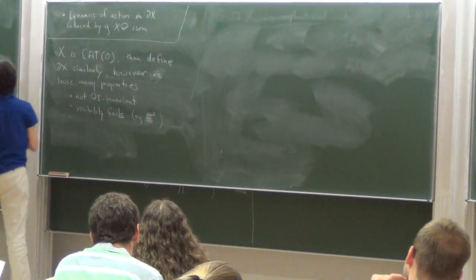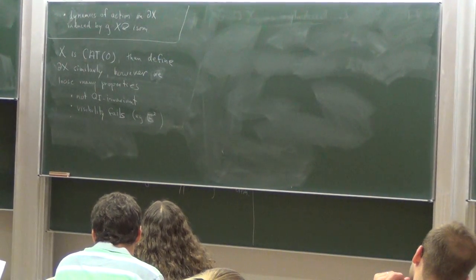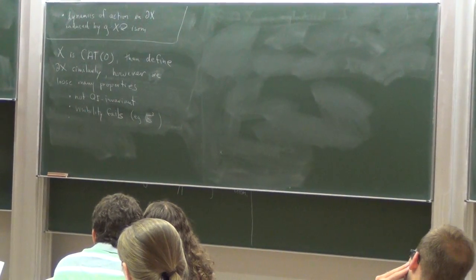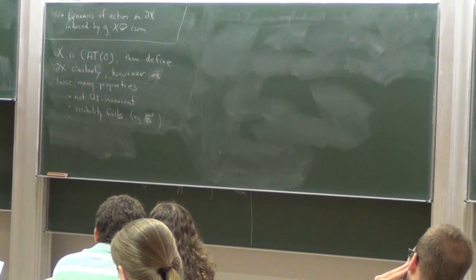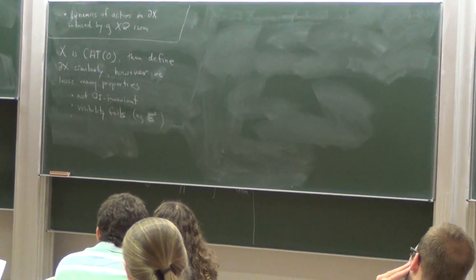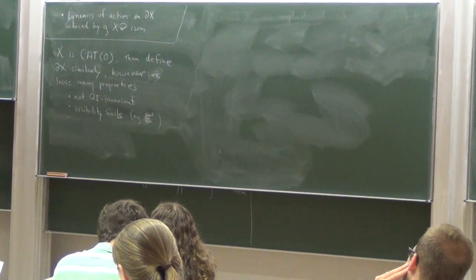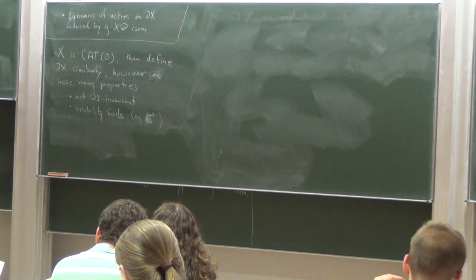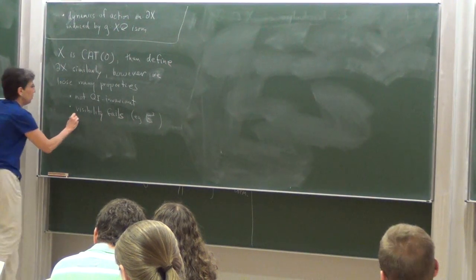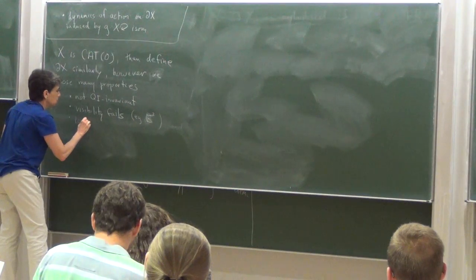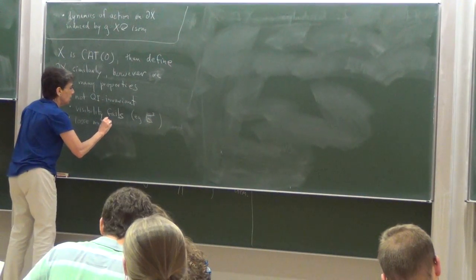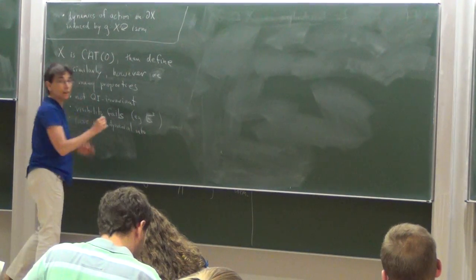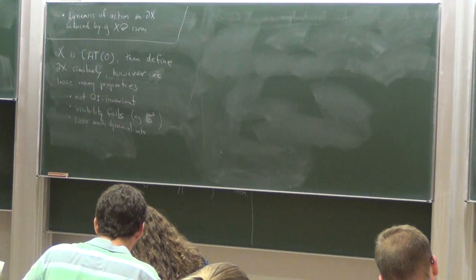And finally, the dynamics. Well, dynamics, there is some dynamical information, but there's also a lot of stuff you lose. For example, Z2 acting on the plane acts trivially on the boundary. So you have, there is still some good dynamical stuff, but you don't have Morse dynamics in general. You can have, I'll just say, lose much dynamical information. It's not nearly as strong and as nice as it is in the hyperbolic case.